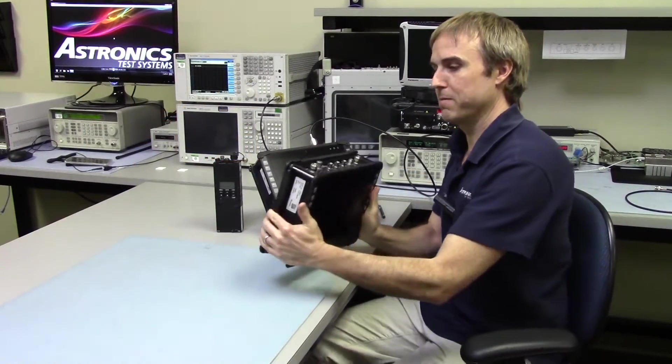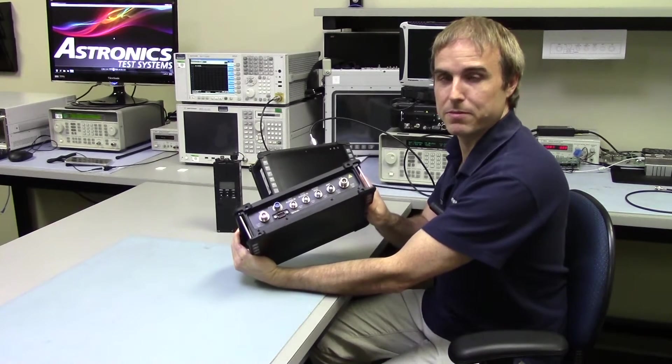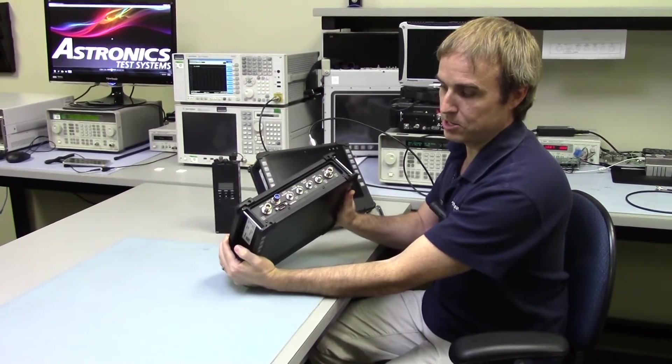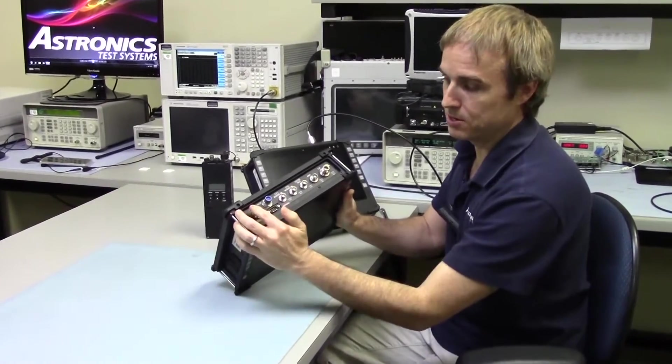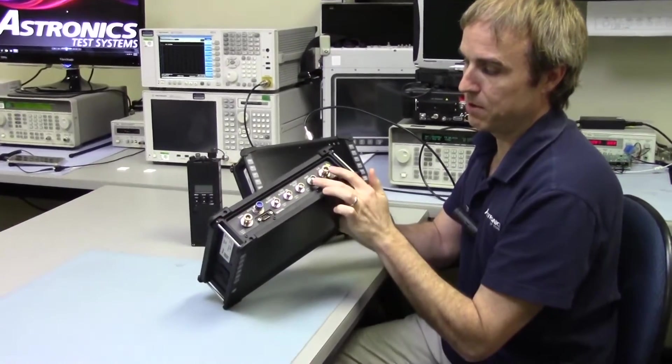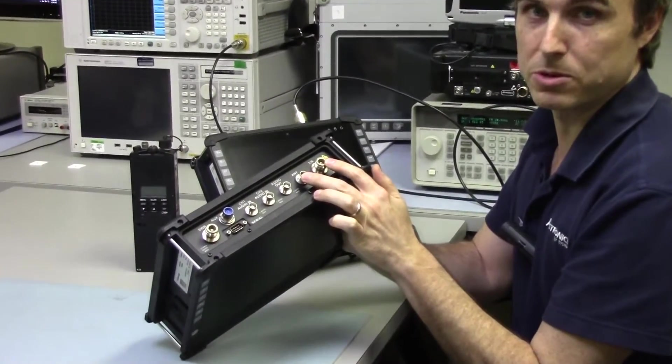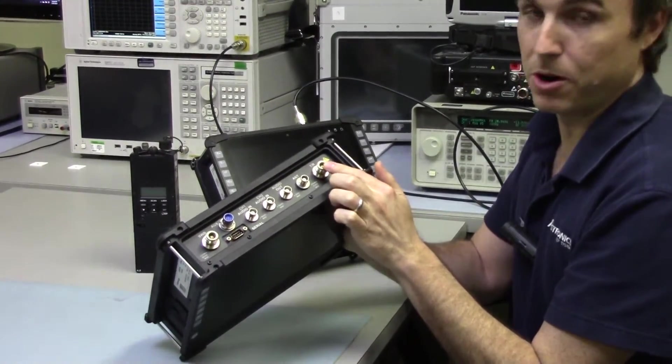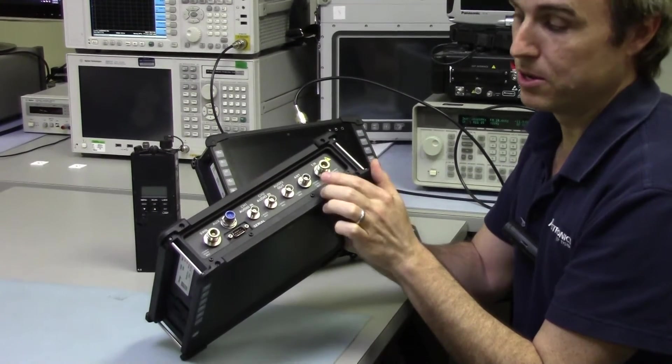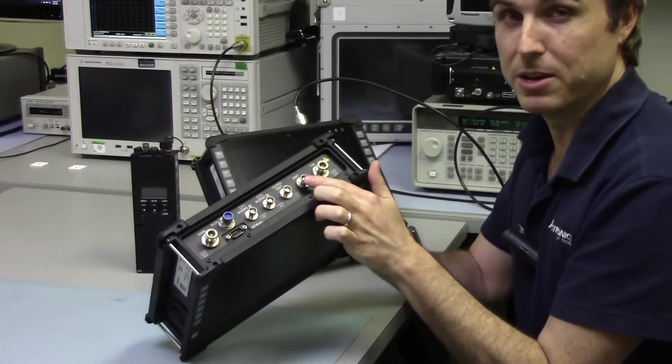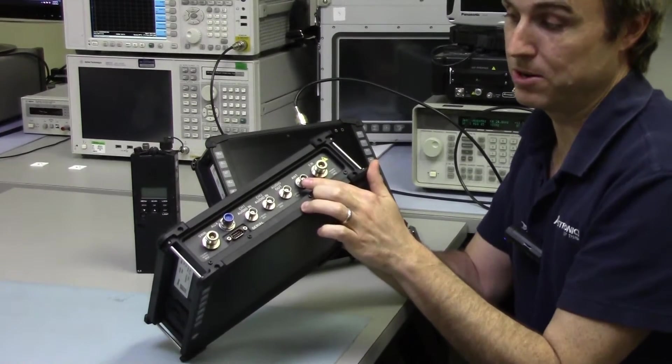Here we have on the top the different connectors. We have a connection for the network analyzer on the left. We have dual transmit receive ports, the TR being the high power port, the antenna being the lower power port that could allow you to stimulate something such as an amplifier while you're also testing the output of the amplifier on the TR port.